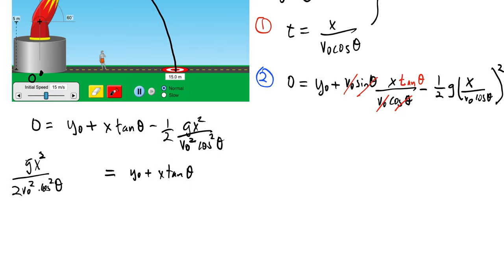Now I need to get the V0 squared on one side of the equation by itself, so I'm going to multiply both sides by V0 squared, that'll cancel the thing down here